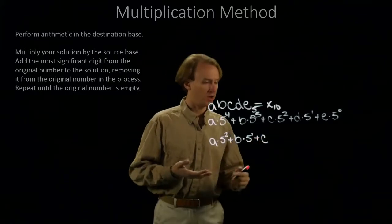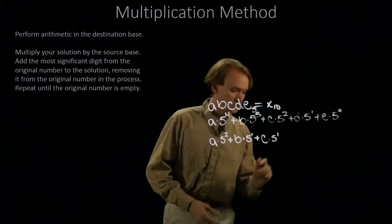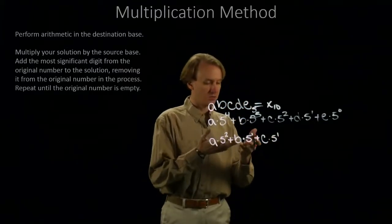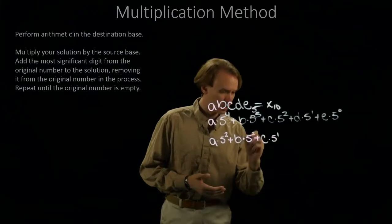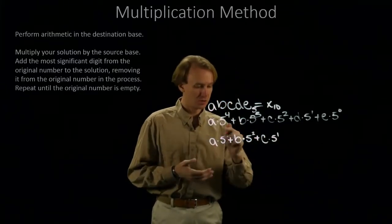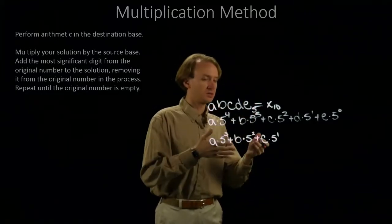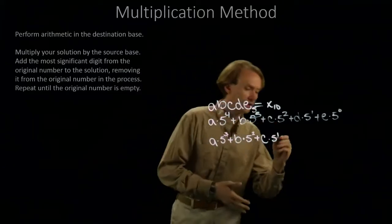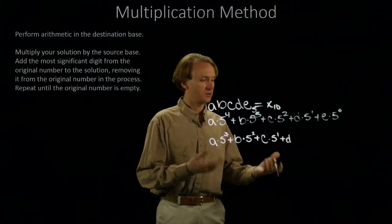So, I multiply everything by 5. C is now C times 5 to the 1st. B is now B times 5 squared. A is A times 5 to the 1st. Second half is adding D. This is the end of the iteration.